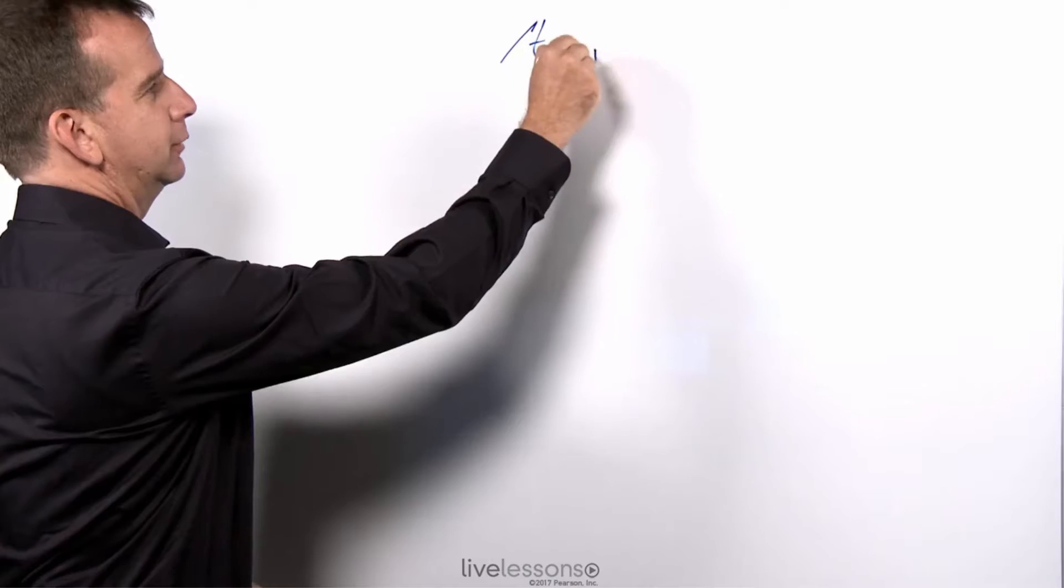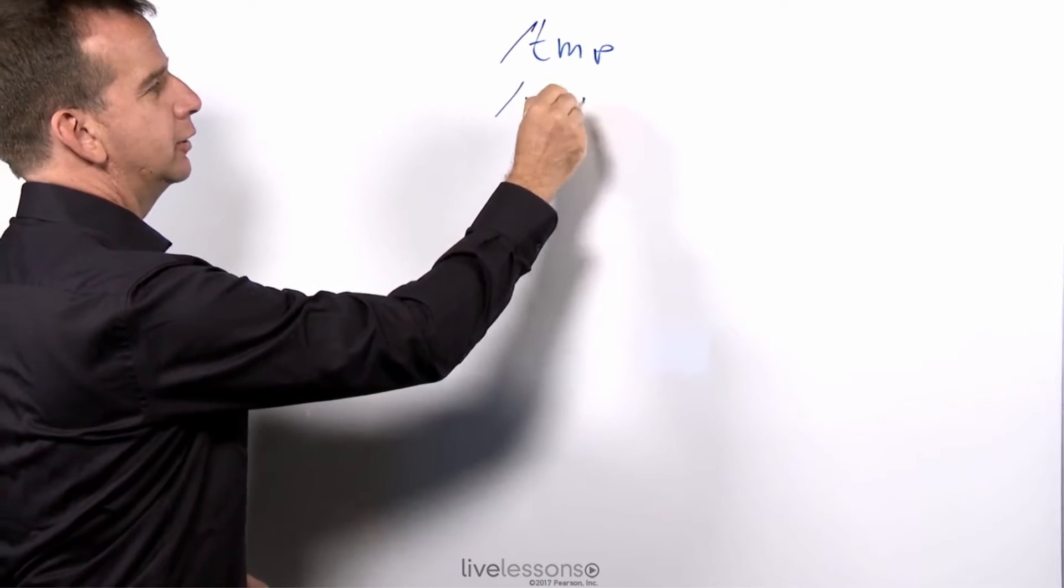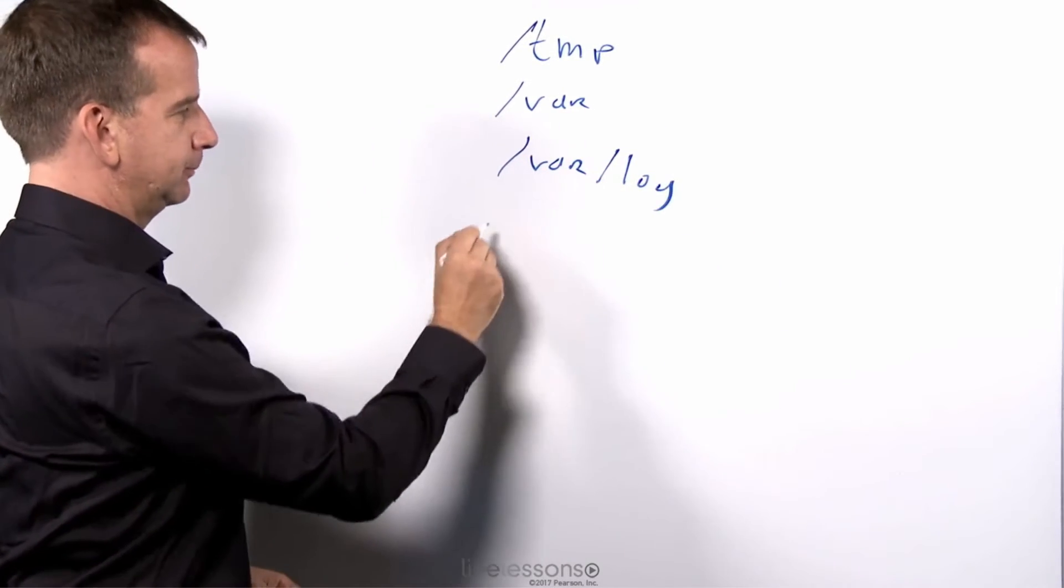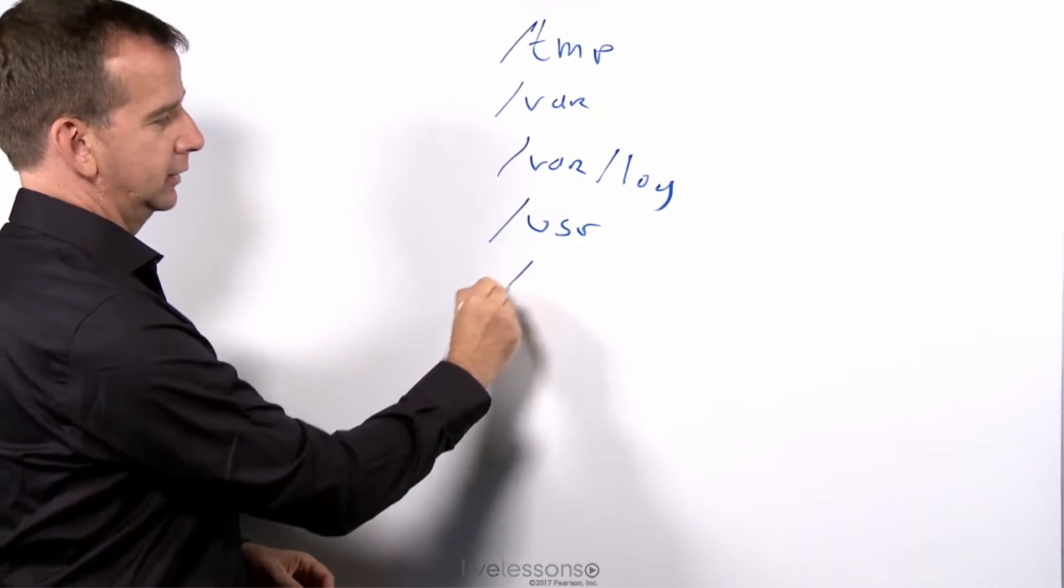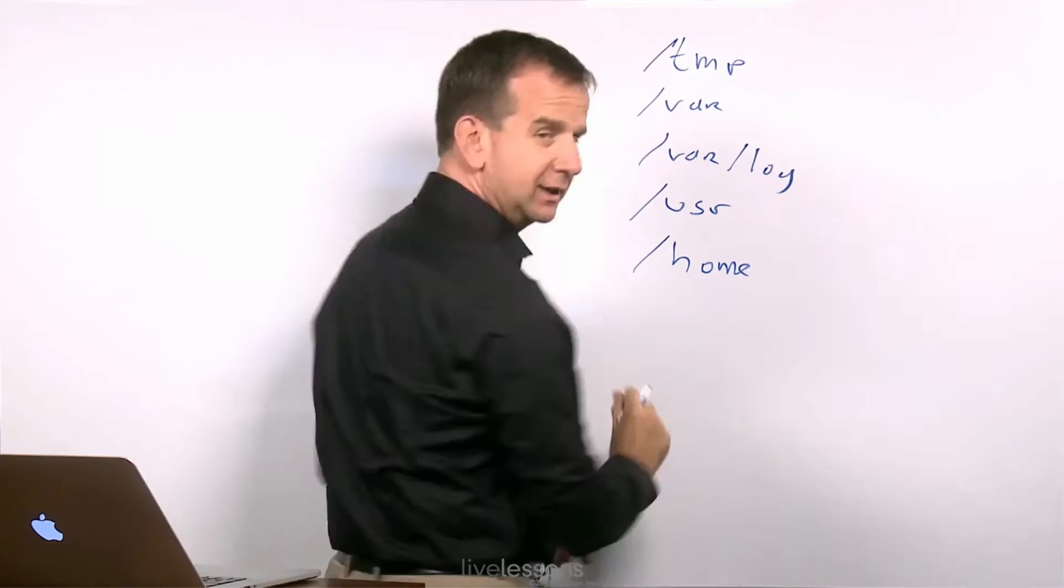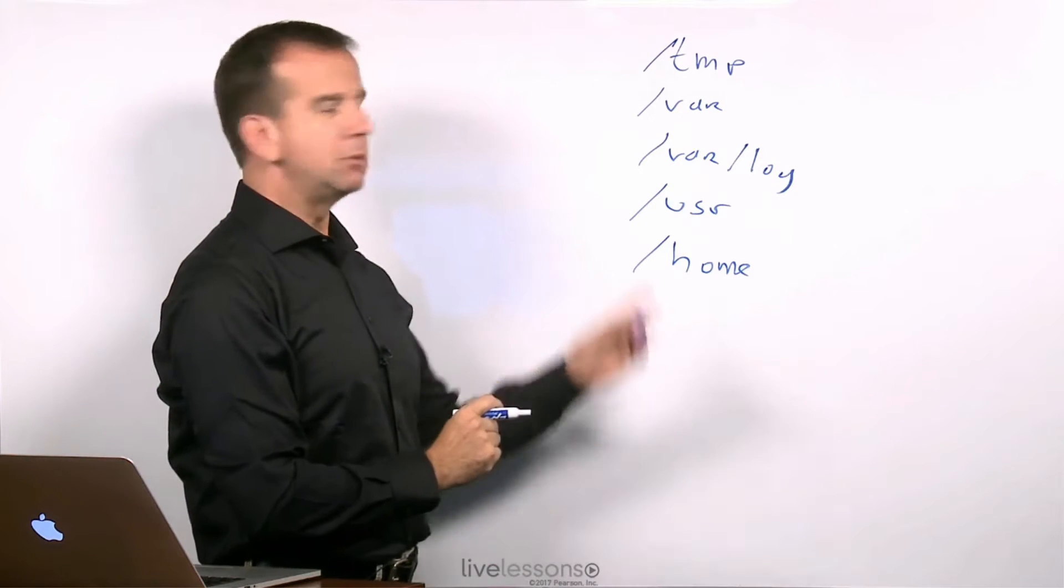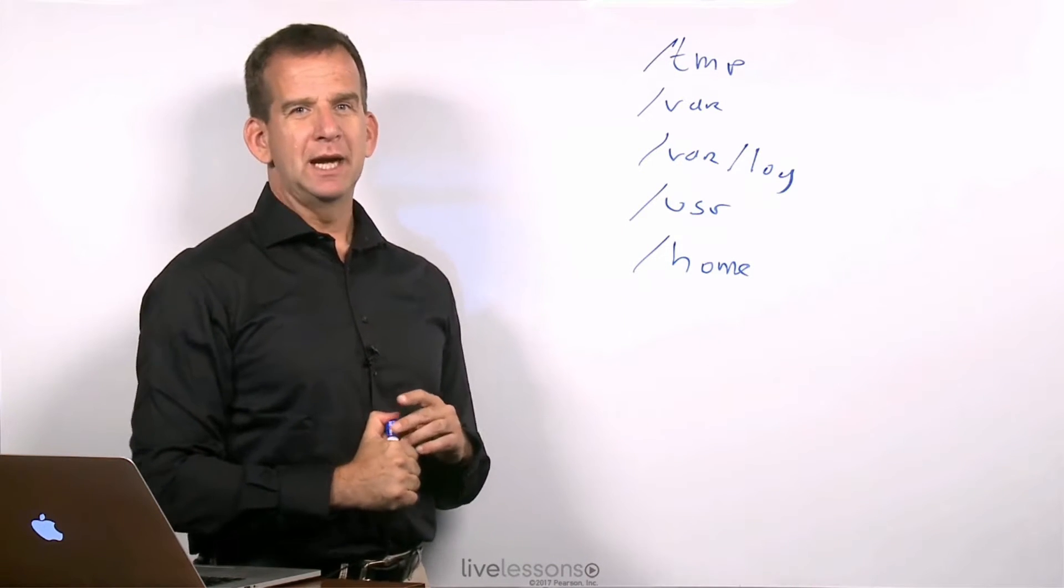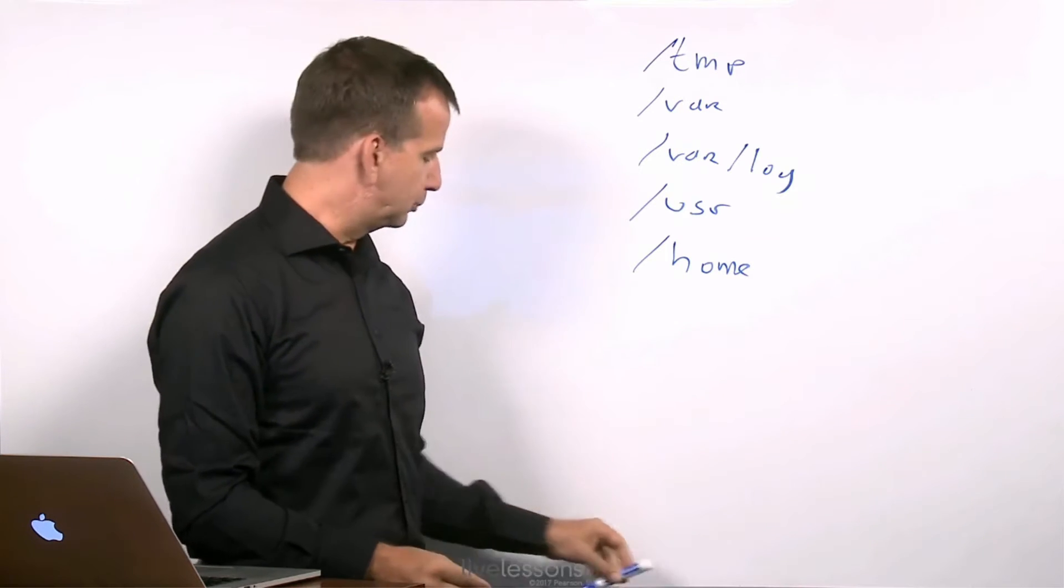Like the temp directory for example, or the var directory, or the var log directory, or what about the user directory, or the home directories. These are the most common examples of directories that typically are split off for securing them with different mount options.